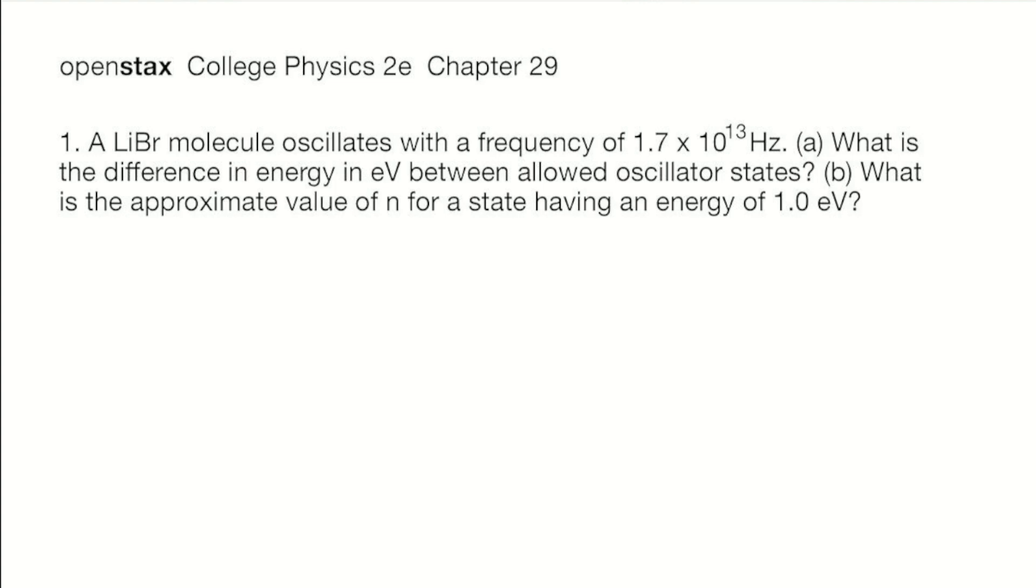Let's start with what we know. We know the frequency is 1.7 times 10 to the 13 hertz, and we need to find the difference in energy between allowed states. Then given an energy of 1.0 electron volts, we need to find the value of n.